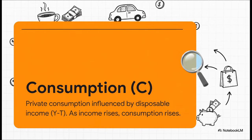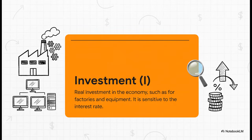That's the money we have left after the government takes its cut in taxes. Next, we have investment, or I. Quick clarification — this is not about buying stocks and bonds. In macroeconomics, investment means businesses spending real cash on physical stuff to help them produce more: things like a brand new factory, a fleet of delivery trucks, or upgraded computers. And this is super sensitive to the interest rate, because that's basically the cost of borrowing the money to fund those big projects.